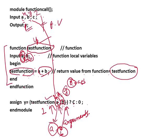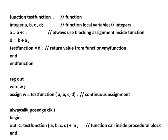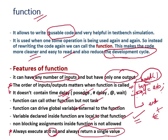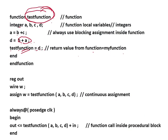If it returns a value and is true, then c is assigned to y; if false, zero is assigned to y. Another example: function 'test_function' with integer variables a, b, c, d. Inside: a = b + c; d = b + a; test_function = d. The function always returns a value to the name of the function. Note that non-blocking assignments are not allowed inside a function — always use blocking assignments, as shown here.